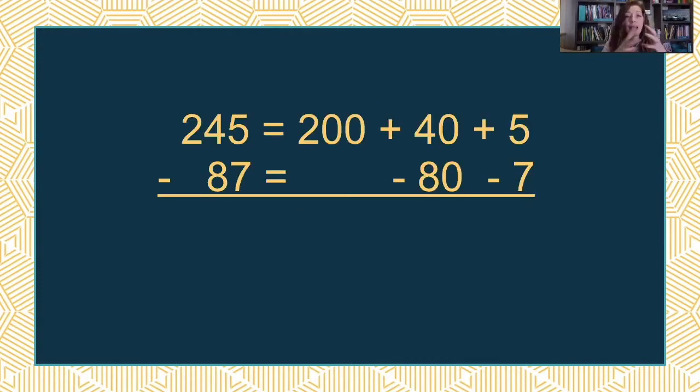But instead, if we take that same problem, and we expand it out using their understanding of place value, that problem really means you have 200, you have 40, and 5. 245, and you have to take away 80 and 7 out of that. And there's different ways kids might set this up. So this is not the only way to solve that.